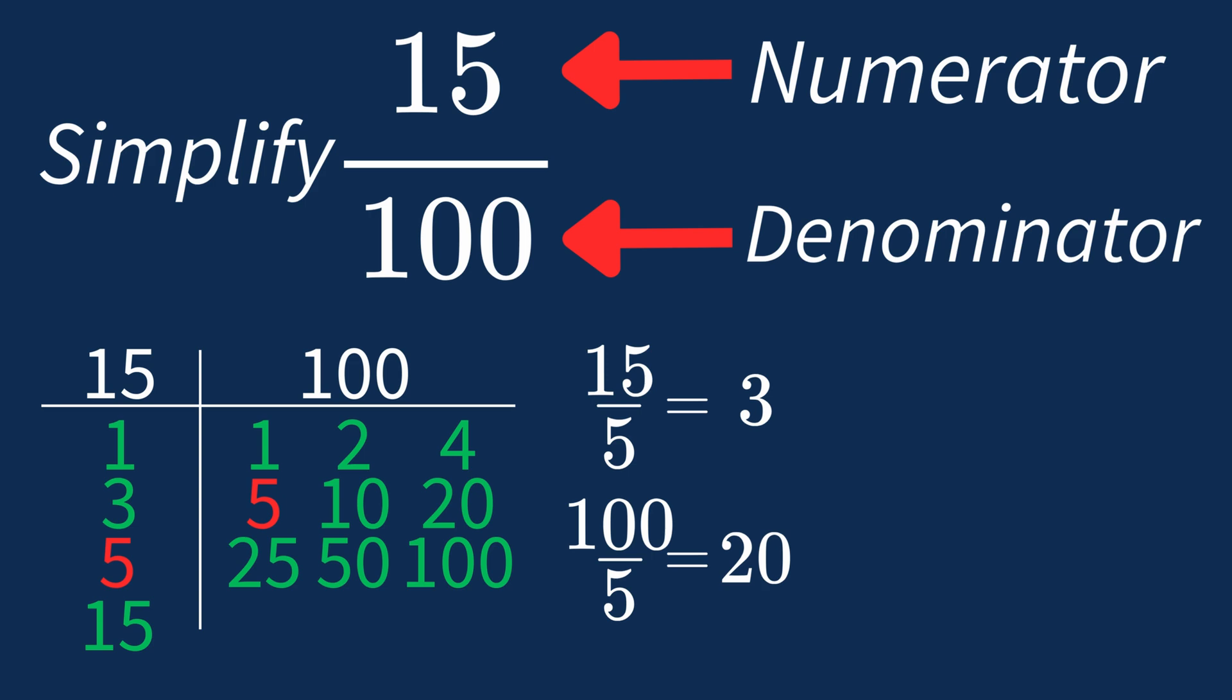So after dividing, the simplified fraction is 3 over 20. And we know that 3 over 20 is in its simplest form, because the only common factor between 3 and 20 is 1. And when 1 is the largest common factor, we know that fraction is already in its simplest form.